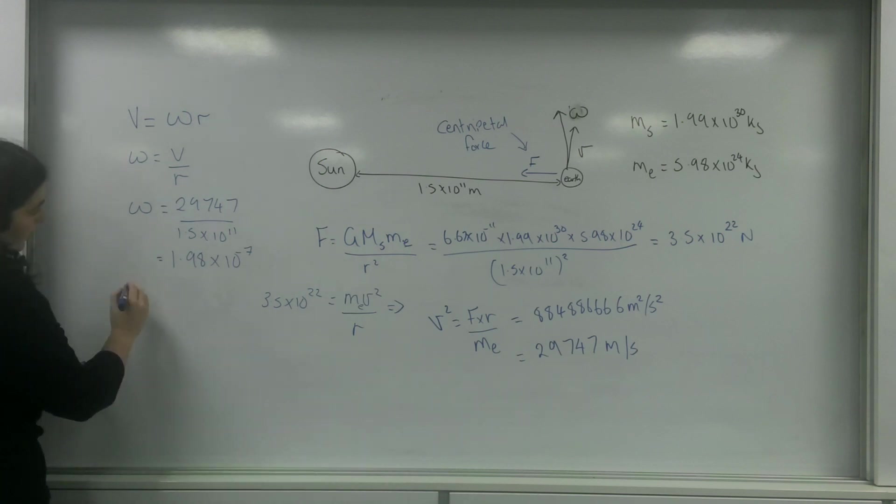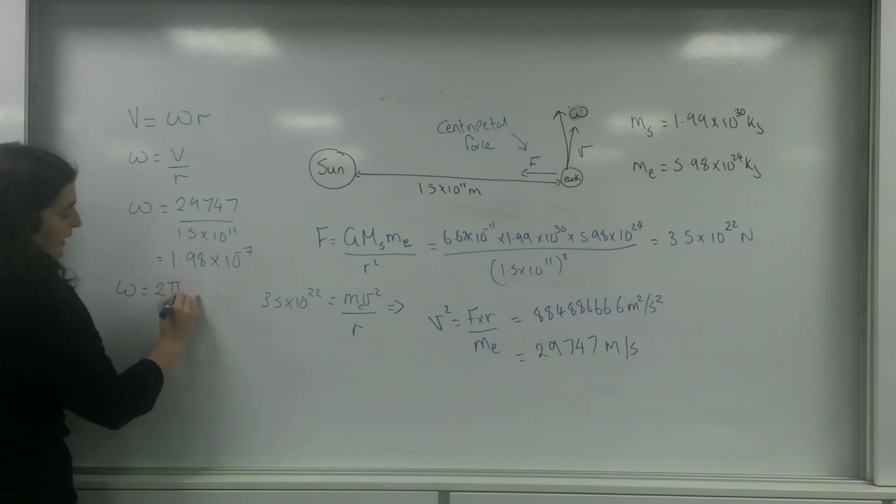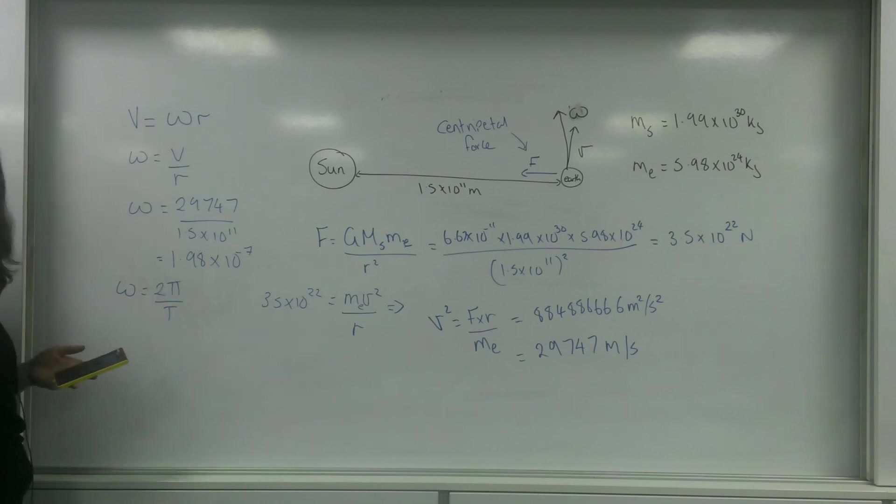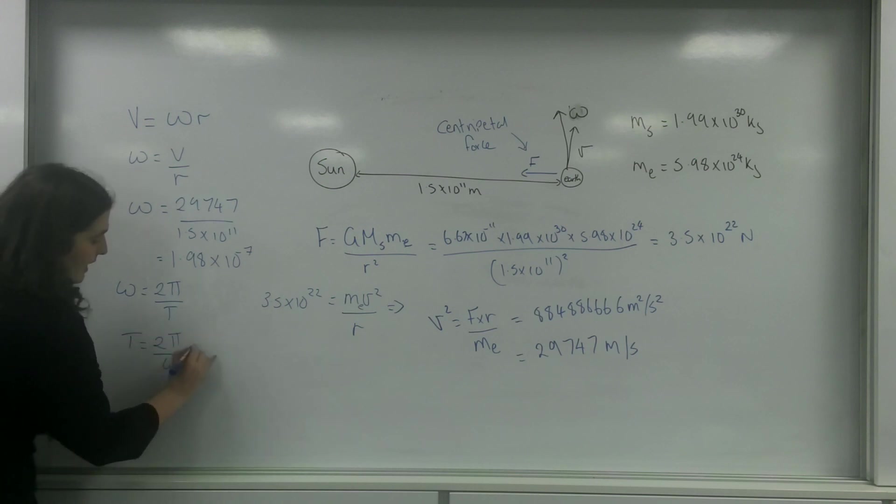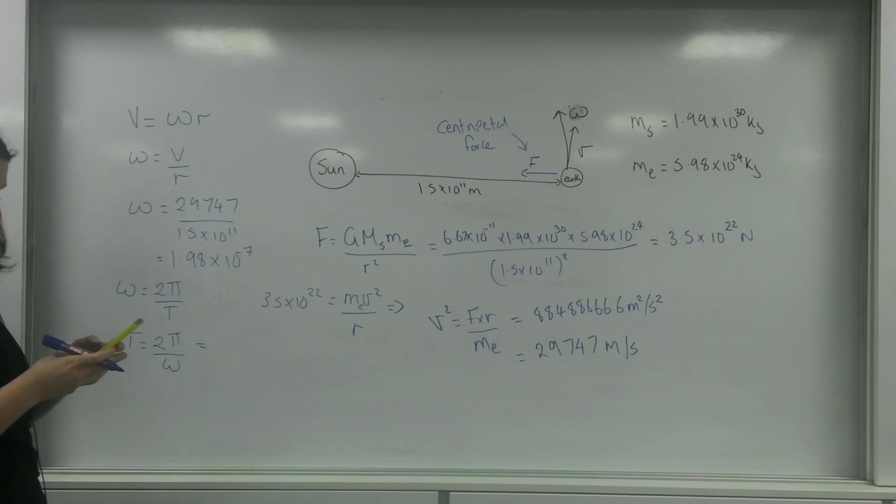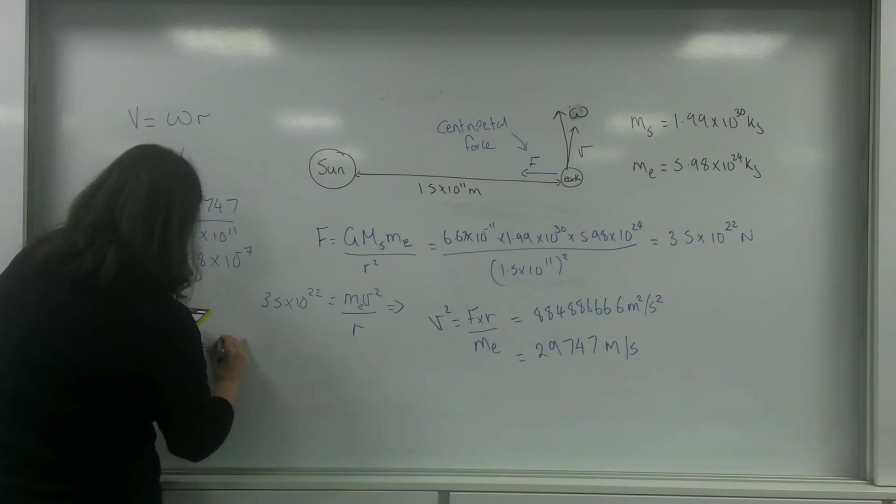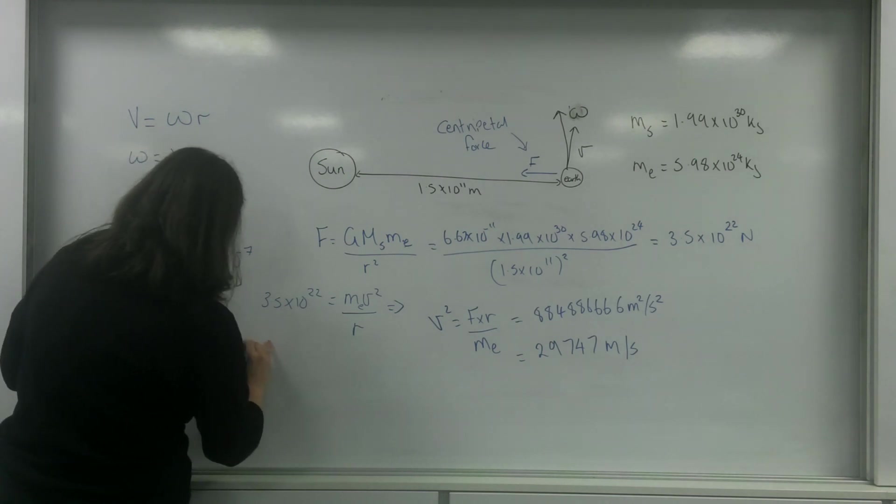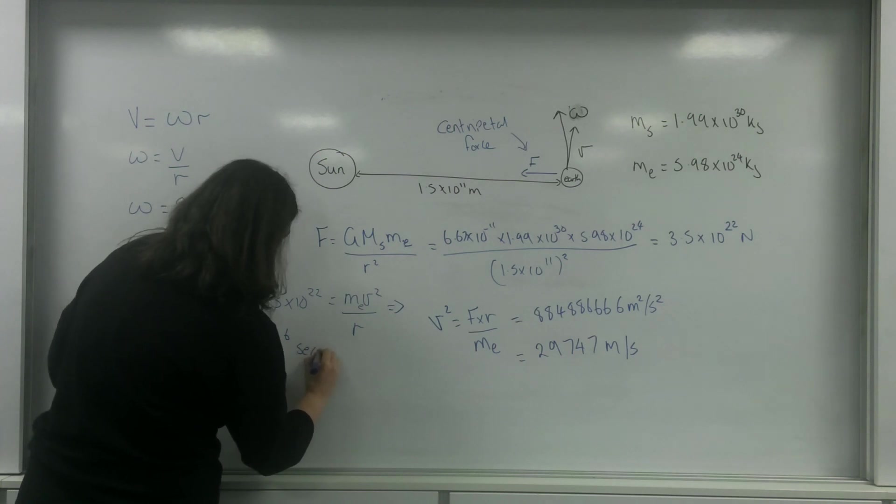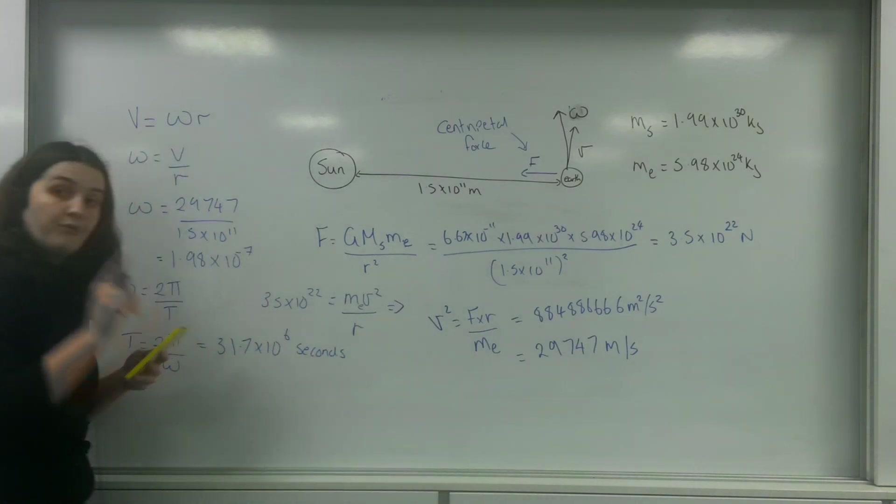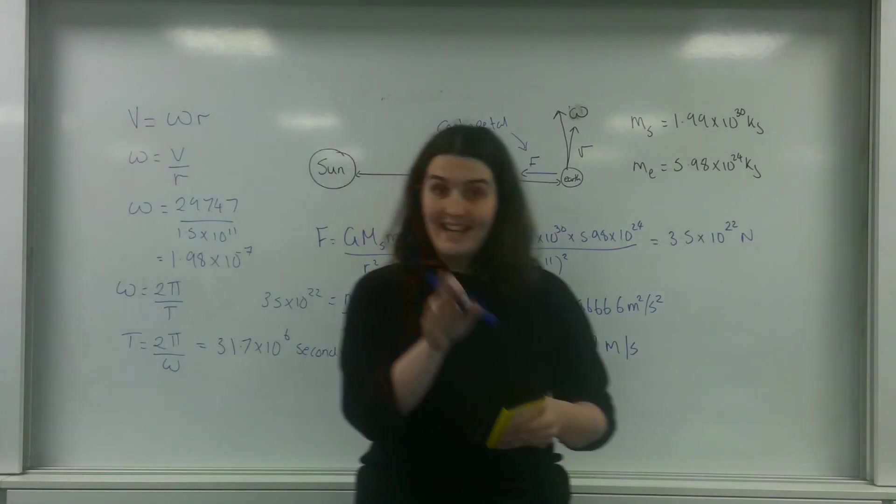If I use the formula omega equals 2 pi over T, I can work out the time period of my orbit. So T is 2 pi over omega. My time is 31.7 times 10 to the 6 seconds. So that is the time for one orbit in seconds.